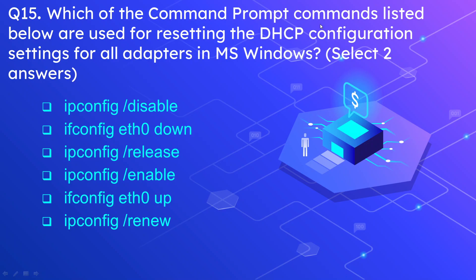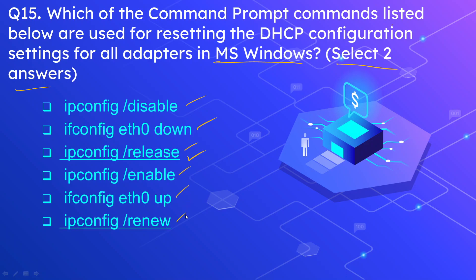Question 15: Which command prompt commands are used for resetting the DHCP configuration settings for all adapters in Microsoft Windows? Select two answers. The options are: ipconfig /disable, ipconfig /release, ipconfig /enable, and ipconfig /renew. The correct answers are ipconfig /release and ipconfig /renew. Note: ifconfig is used in Linux, while ipconfig /release and ipconfig /renew are used in Windows for DHCP configuration.